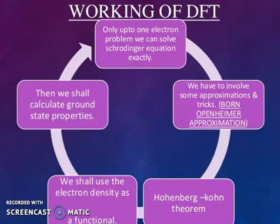This is the working plot of DFT. Only up to one electron problem we can solve with the help of Schrödinger equation. We have to involve some approximations and tricks: Born-Oppenheimer approximation, Hohenberg-Kohn theorem, and we shall use the electron density as a functional. Then we shall calculate the ground state properties.